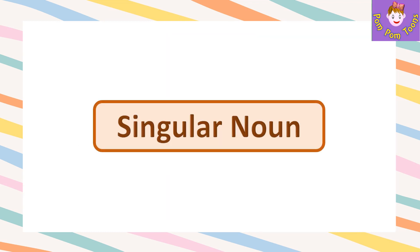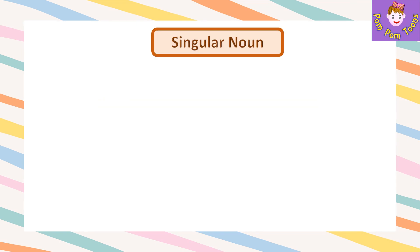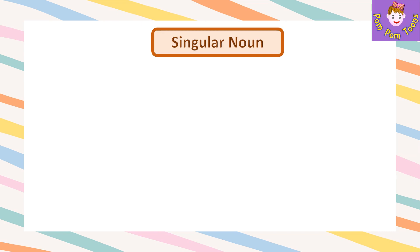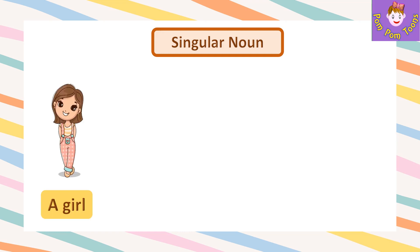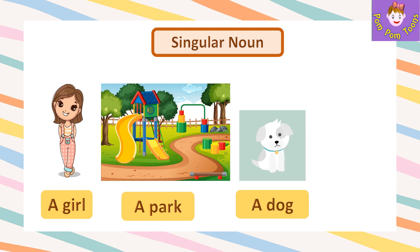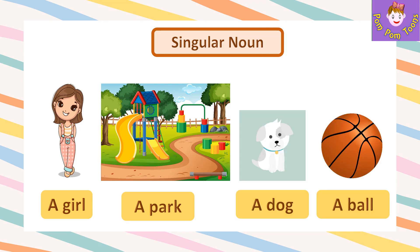Singular Noun: A noun that names only one person, place, animal or thing is called a singular noun. For example, a girl, a park, a dog, a ball.